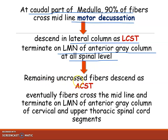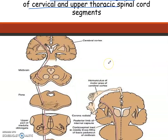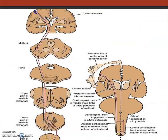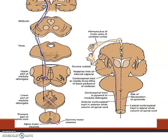The remaining uncrossed fibers descend as the anterior corticospinal tract, while the lateral column ones descend as the lateral corticospinal tract. The fibers then cross the midline and terminate on the lower motor neurons of the anterior horn of the cervical and upper thoracic spinal cord segments. As you can see, these fibers arise in the cerebral cortex, go down through the midbrain, travel ipsilaterally through the pons, and when they reach the lower medulla oblongata they decussate and go contralaterally.